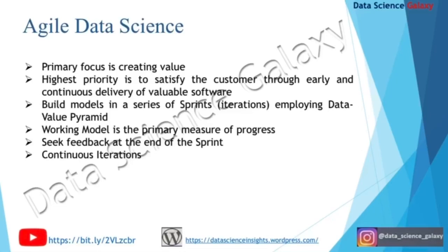In agile development, the working model is the primary measure of focus. We create value for the client in short-term sprints. At the end of each sprint we seek feedback — this way, anything that could go wrong is contained to the length of the sprint and not beyond. There is always learning from the end of sprint cycles and defect prevention as part of continuous improvement. We build continuous iterations to eventually meet all the business objectives of the client.